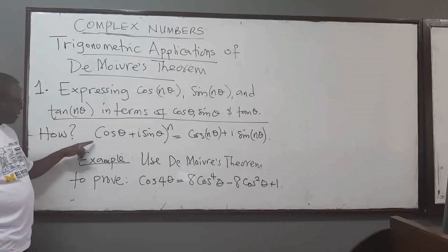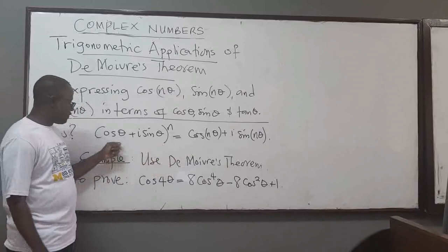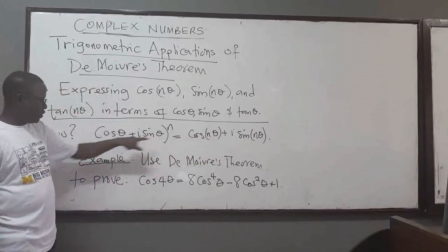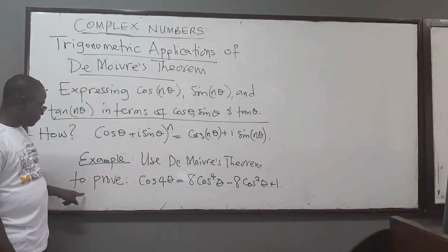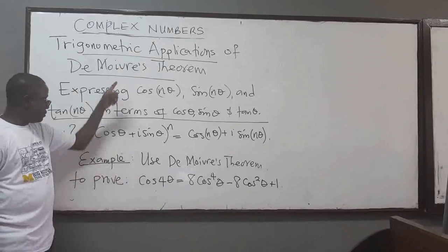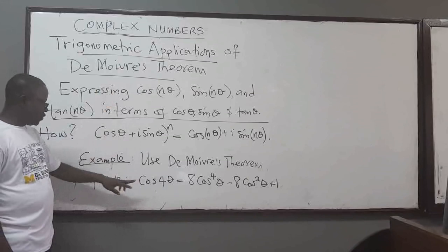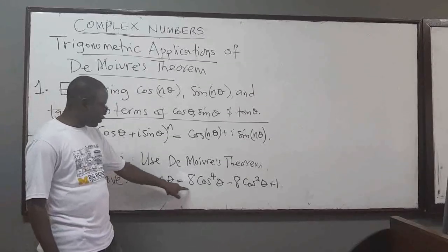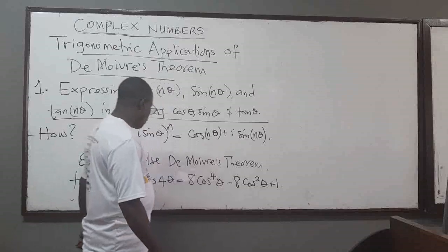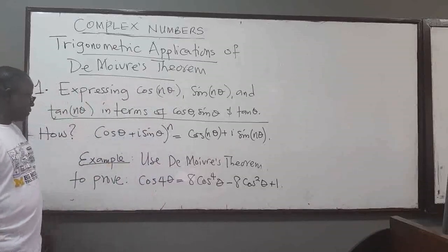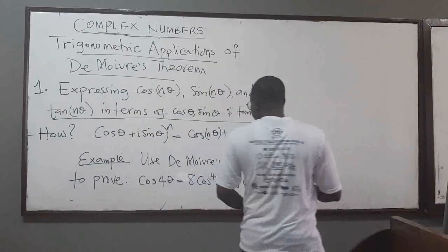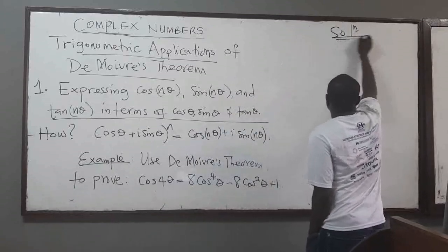We know the statement of De Moivre's theorem: (cos θ + i sin θ)^n = cos(nθ) + i sin(nθ), which just multiplies the argument by n. We are going to use this example to illustrate how you apply it. The example says: use De Moivre's theorem to prove that cos(4θ) = 8cos⁴θ - 8cos²θ + 1.